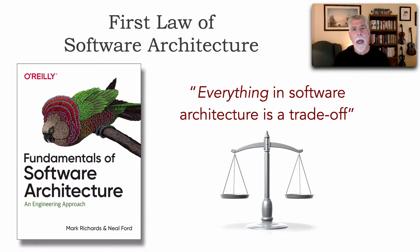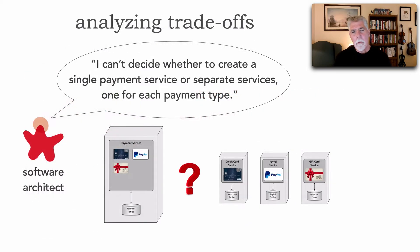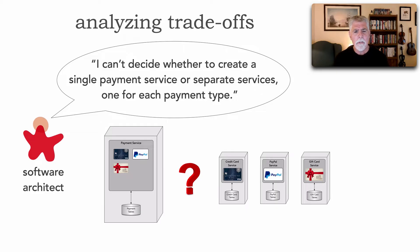Let's take a look at how to do modern trade-off analysis, which is actually the subtitle for our second book, Architecture: The Hard Parts. When we talk about analyzing trade-offs, let's say an architect is faced with this kind of decision: should I create a single payment service or separate services, one for each payment type? This is a typical architecture trade-off analysis decision that we have to make.